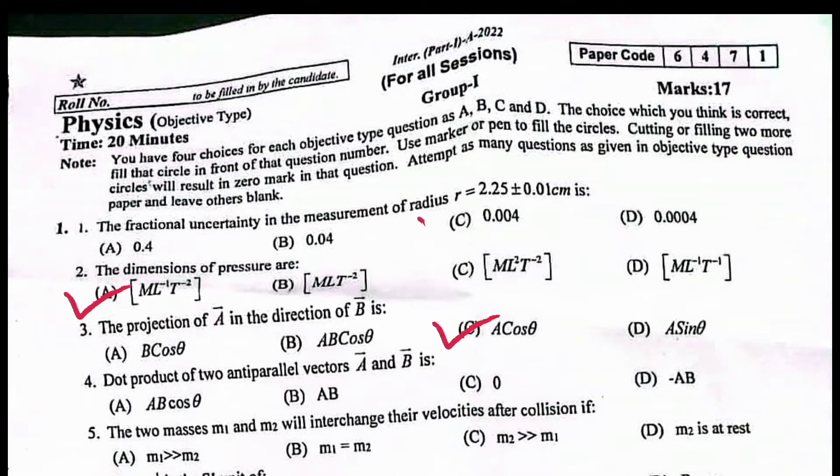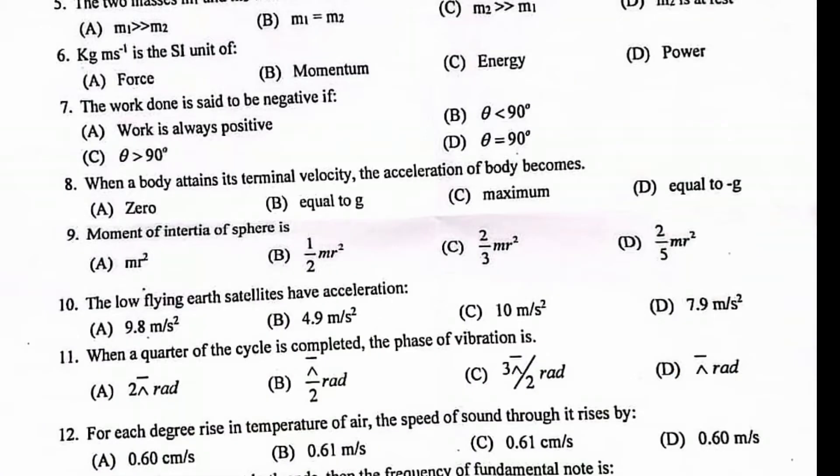Dot product of two antiparallel vectors A and B is minus AB. The two masses m1 and m2 will interchange their velocity after collision if m1 equal to m2. Kilogram meter per second is the SI unit of momentum.